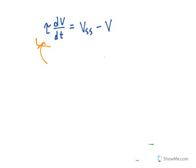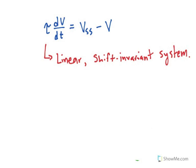So the passive neuronal membrane actually is a very special class, or belongs to a special class of differential equations. Specifically, this differential equation is a linear shift-invariant system.